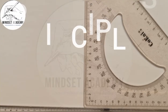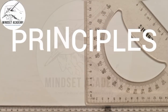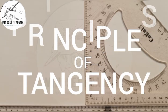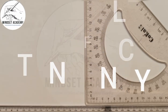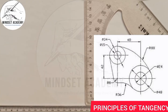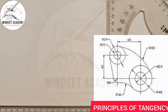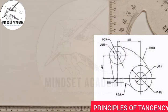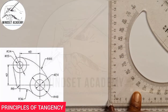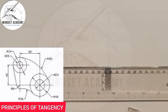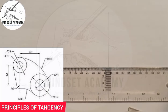Welcome to Mindset Academy, where we want to reproduce the figure displayed on the right-hand side of the screen using the principle of tangency. The first thing to do is to draw your vertical and horizontal lines.